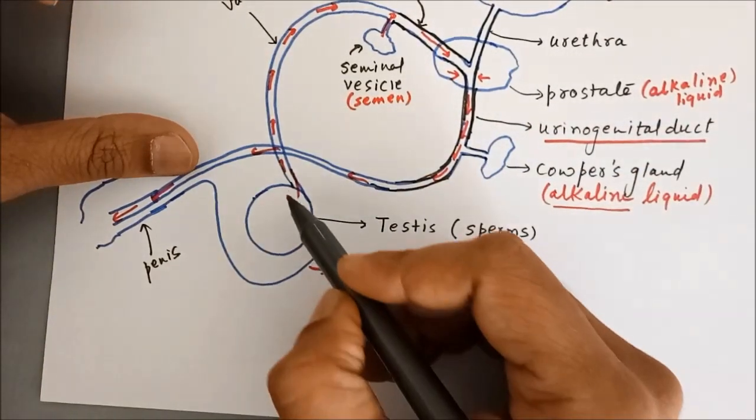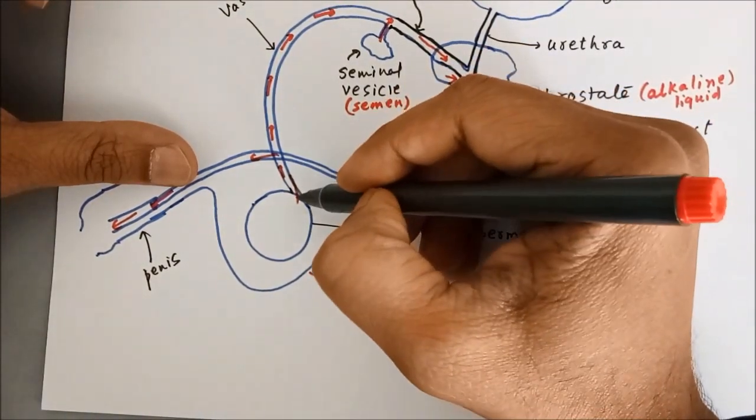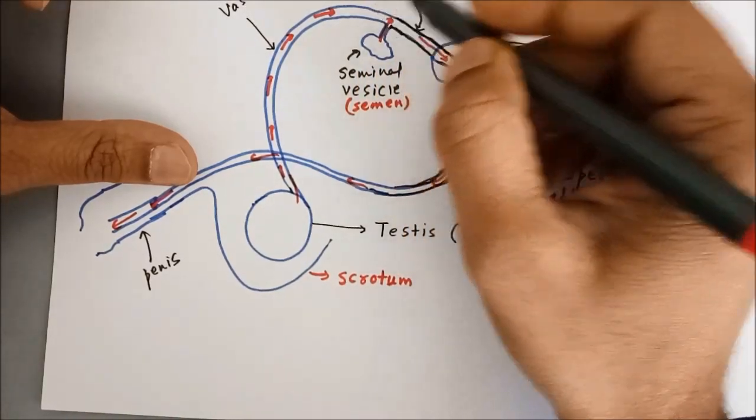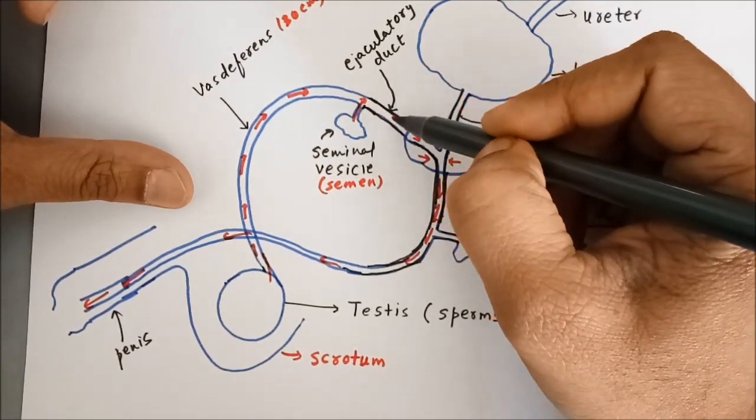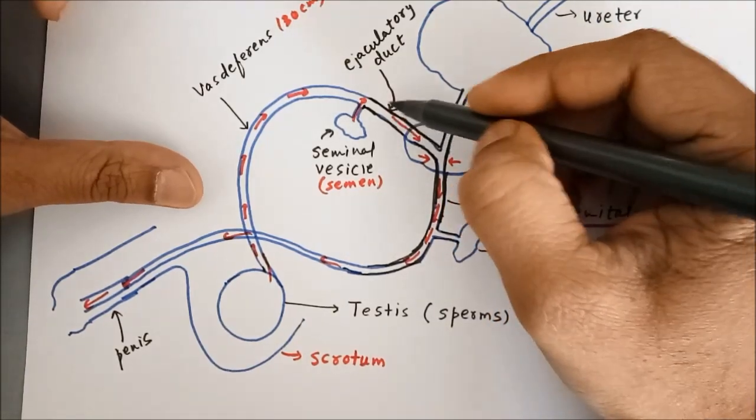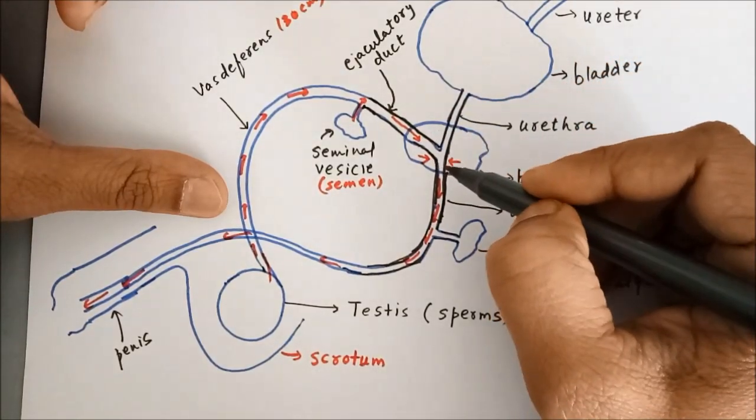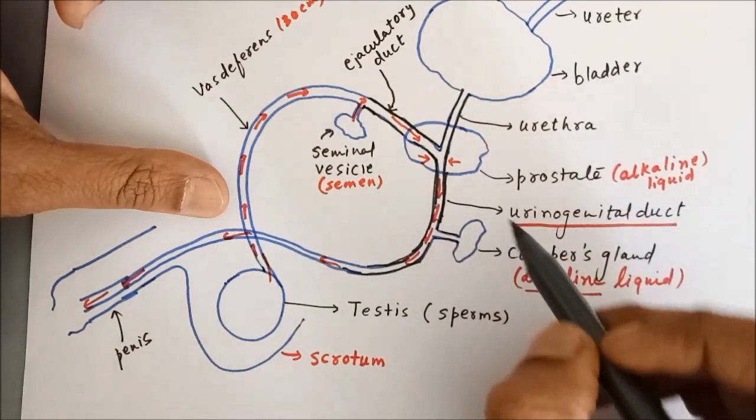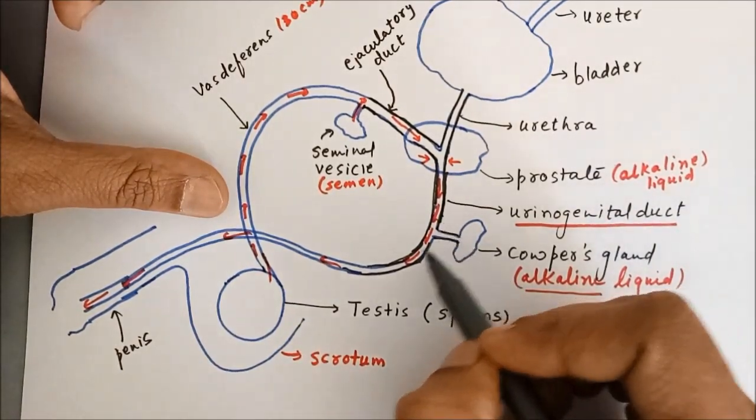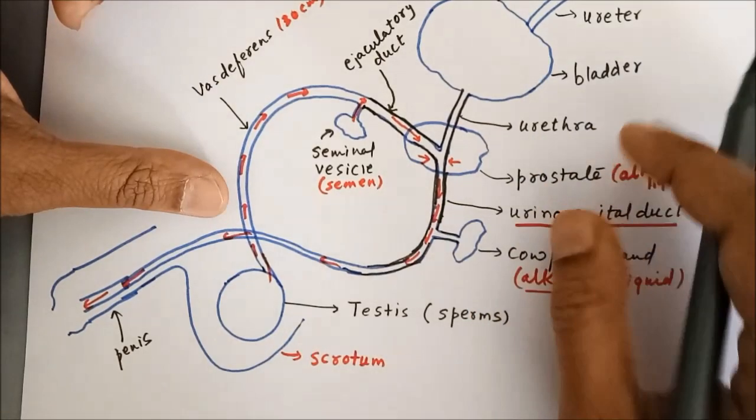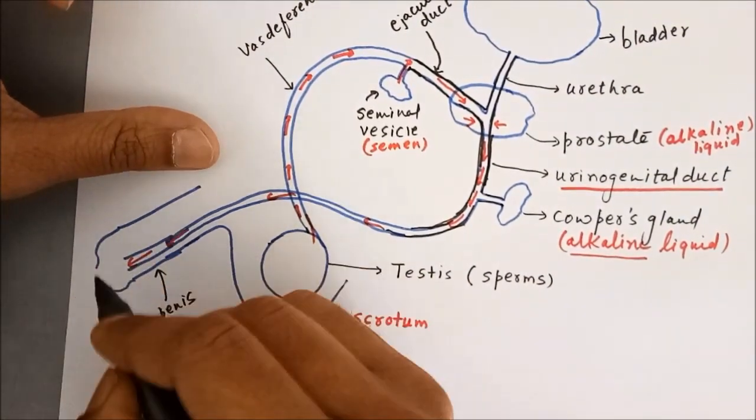So to brief up, from the testis the sperms, the male reproductive gametes that are produced only after puberty, travel ahead in vas deferens, which is a long tube. Then the seminal vesicle adds the semen, the whitish liquid, and the combination of semen and sperms pass ahead in the ejaculatory duct. Inside the prostate gland, the urethra and ejaculatory duct meet together. Finally it is called a common duct, the urinogenital tract. Then the Cooper's gland adds alkaline liquid which counteracts the acidic nature of the urine. And finally, the semen as well as the sperms are pushed out of the body through a muscular organ called penis.